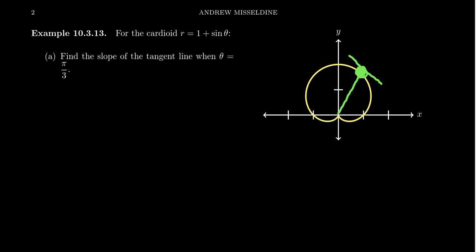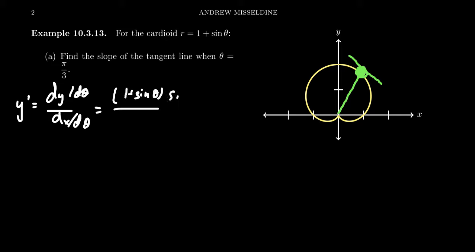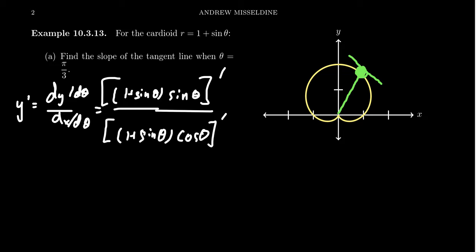What we're looking for is y prime — dy over d theta divided by dx over d theta. We have r, which is 1 plus sine theta, times sine for the y expression. We need to take the derivative of this on top. And for x, we have 1 plus sine theta times cosine theta, then take the derivative with respect to theta. By the product rule on the top, you take the derivative of 1 plus sine, you get a cosine, times sine theta; then 1 plus sine theta remains and you take the derivative of sine, which is cosine.